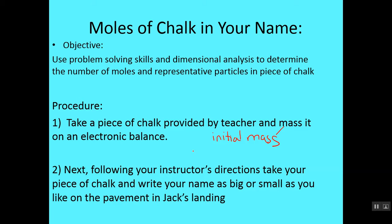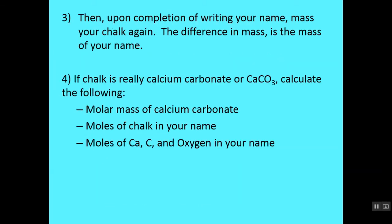Then you're going to follow your instructor's directions to take that piece of chalk and go down to Jack's Landing, and on the pavement down there you're going to write your name as big or small as you like. Now you can write just your first name, your last name, your full name, it doesn't really matter. You're just going to go down there and you're going to write your name. Once you do that, you're going to come back upstairs, and you're ready to complete step three.